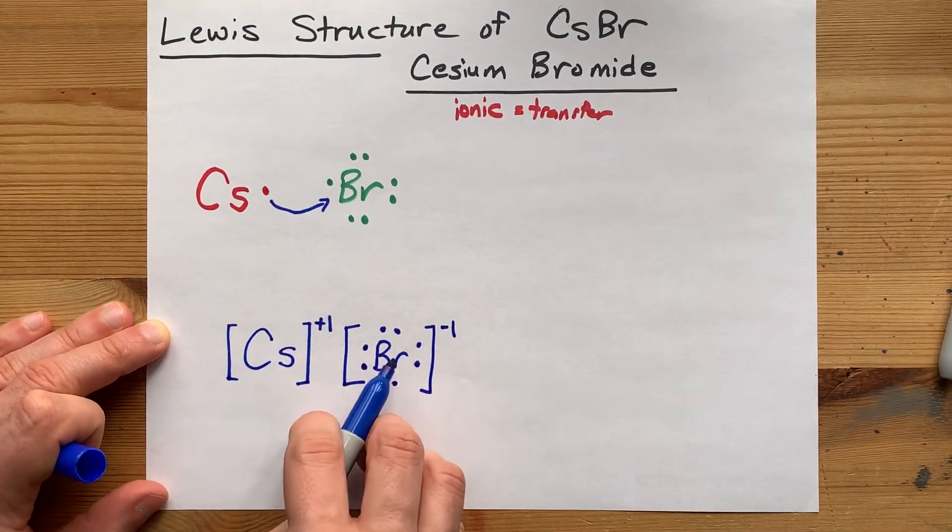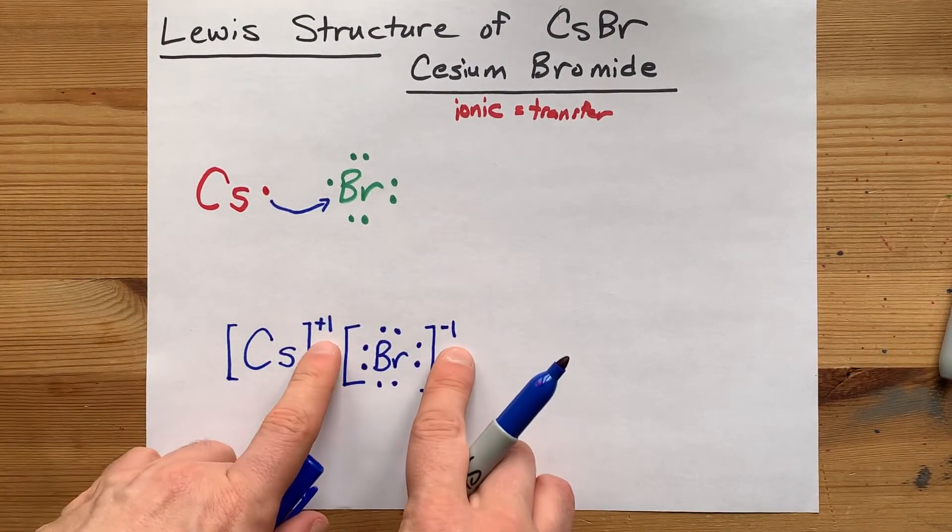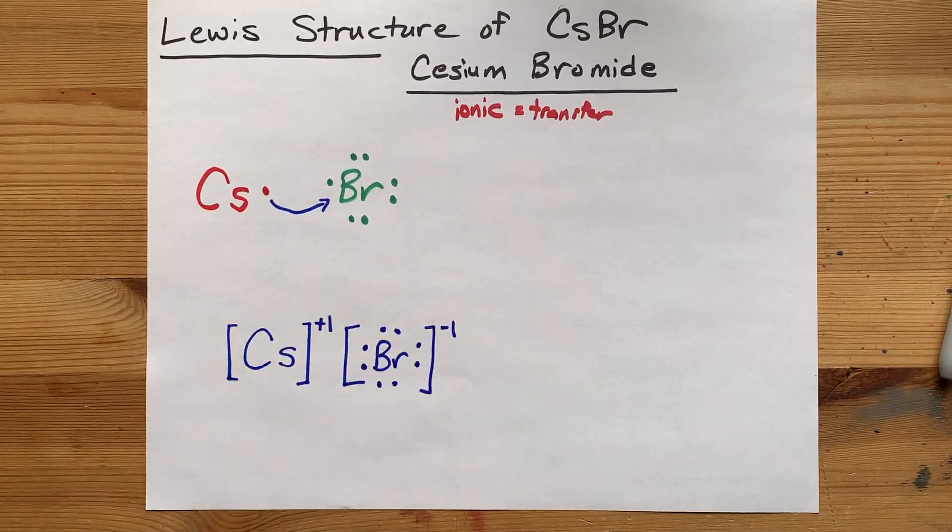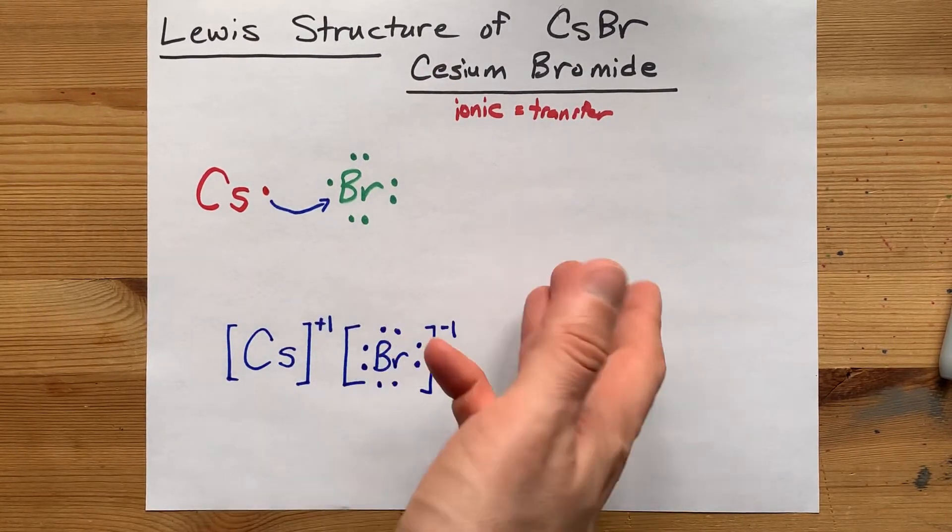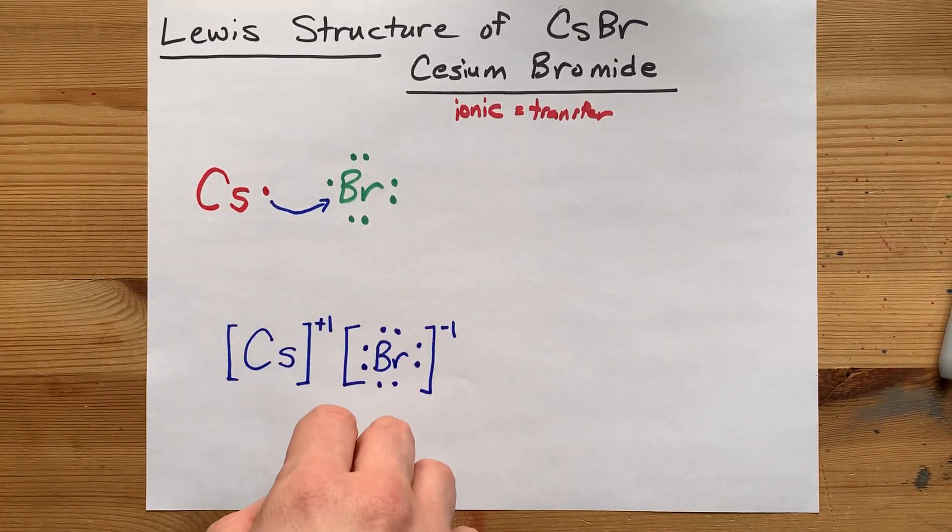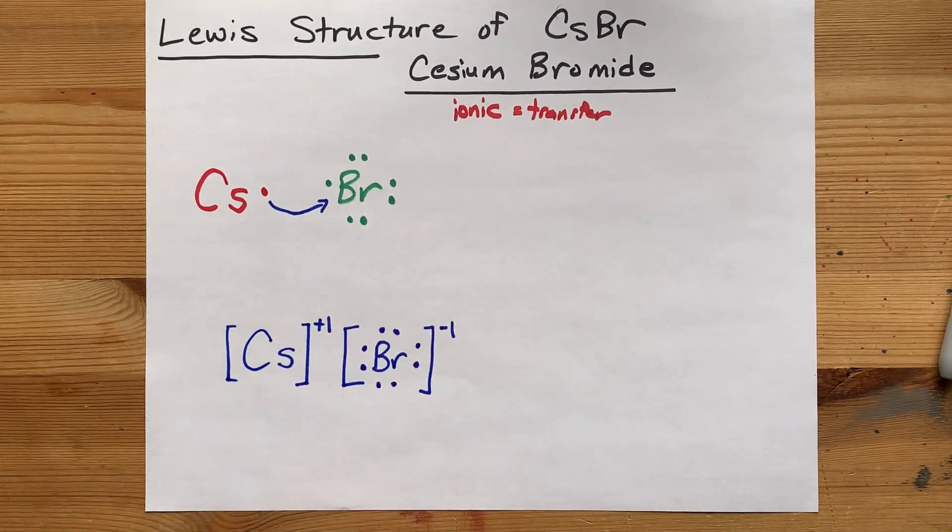And this here, with the square brackets representing the ions and the charges written in the top right-hand corners, is the completed Lewis structure for cesium bromide. All metal, non-metal Lewis structures will look something like this because they are ionic compounds.